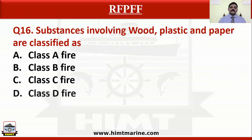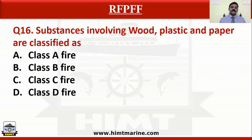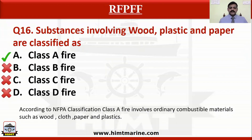Question number 16: Substances involving wood, plastic, and paper are classified as option A class A fire, option B class B fire, option C class C fire, option D class D fire. Option A is the correct answer because according to NFPA, fires involving ordinary combustible materials such as wood, cloth, paper, and plastics are classified as class A fire.